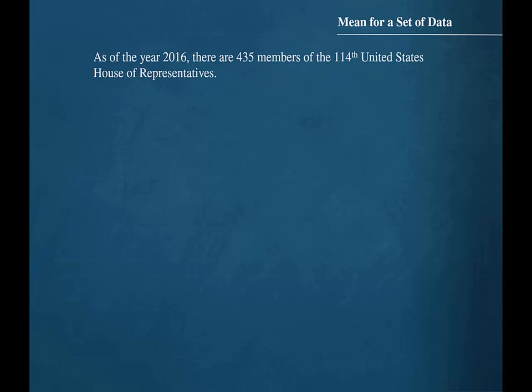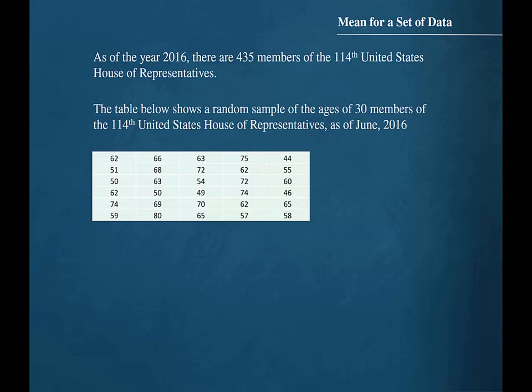As of the year 2016, there are 435 members of the 114th United States House of Representatives. The table below shows a random sample of the ages of 30 members of the 114th United States House of Representatives as of June 2016.